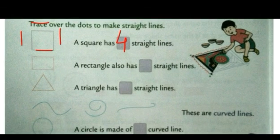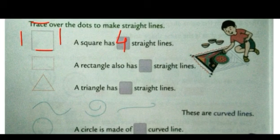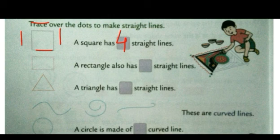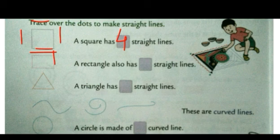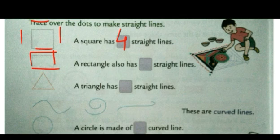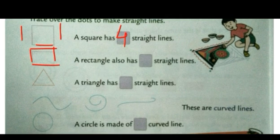Now see the next shape. It's a shape of a rectangle. A rectangle also has dash straight lines. So how many straight lines can you see here? One, two, three, four — we can see four straight lines. So again we will write here four.